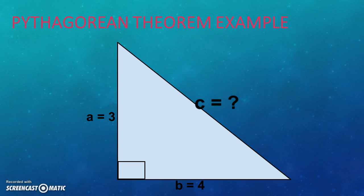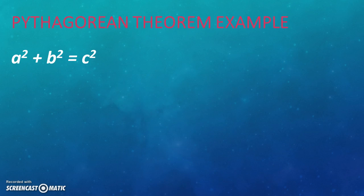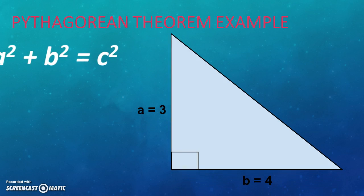Recall that Pythagorean theorem states that square of base plus square of perpendicular equals the square of hypotenuse. Applying the Pythagorean theorem, we can easily find the length of the hypotenuse. Three squared plus four squared equals c squared. That means nine plus sixteen equals twenty-five.